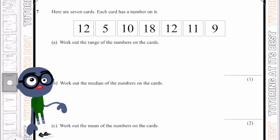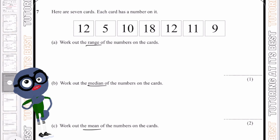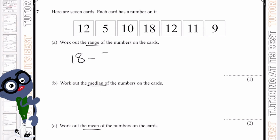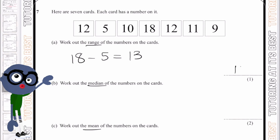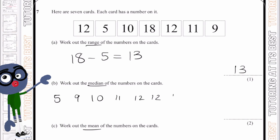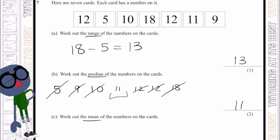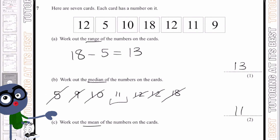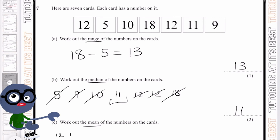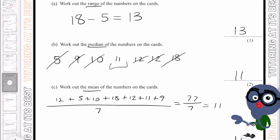Question seven has seven cards. The range: 18 is our largest and 5 is our smallest, so 18 minus 5 gives us 13. For the median, putting the numbers in ascending order and crossing from each end, we're left with 11. For the mean, we add all the numbers to get 77 and divide by 7, which is also 11 — so the median and mean are the same value.